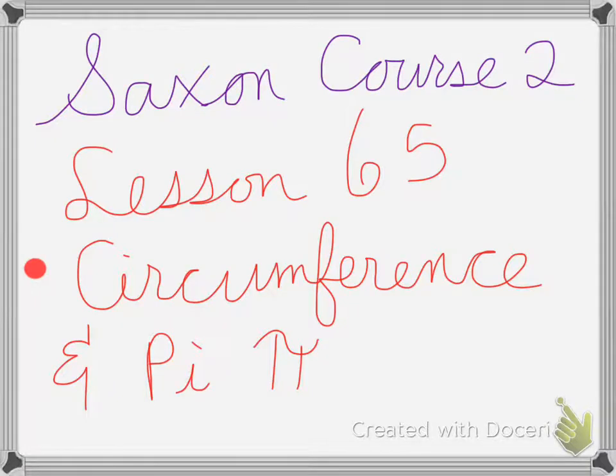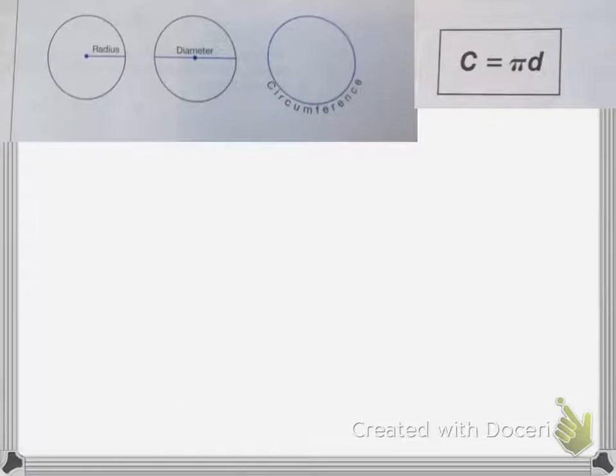Hey, Saxon Course 2, Lesson 65 is on circumference and pi. So if you remember, the radius of a circle is from the center to the outside of the circle. Diameter is a straight line from side to side through the center of a circle. And the circumference is all the way around the circle. So our circumference equals the diameter times pi.